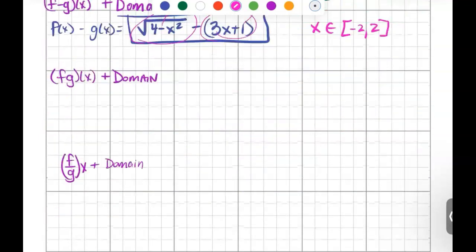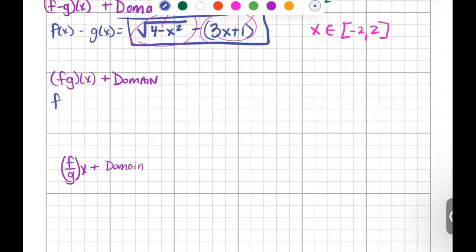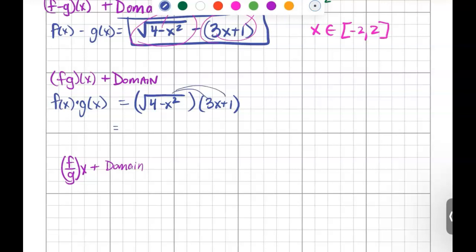Now we're going to look at f times g of x, which is your f function times your g function. So here we're going to have the square root of 4 minus x squared times 3x plus 1. Here, if you multiply them, not much is going to change. It would look like 3x square root of 4 minus x squared plus the square root of 4 minus x squared. So it doesn't look any better when it's distributed. So you could just leave it like this, and it's easier to find your domain this way.